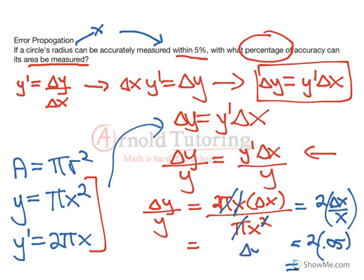So delta y over y, this has just come down from the beginning since I forced it in, equals 2 times 0.05, which is 0.10, which is 10%.